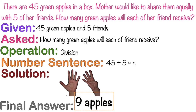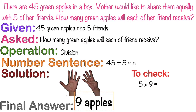Is that clear, children? To check if your answer is correct, simply multiply the divisor, which is 5, by the quotient, which is 9. So let's multiply: 5 times 9 equals 45. Since the product and the dividend are both 45, that means our answer is correct.